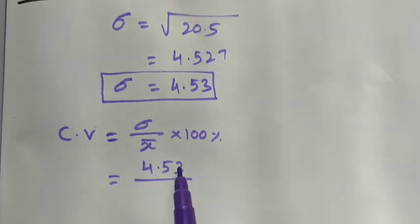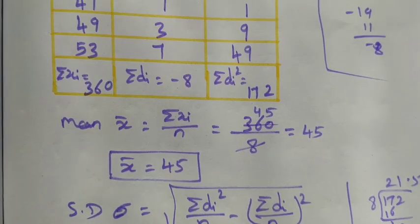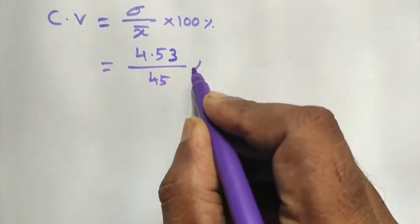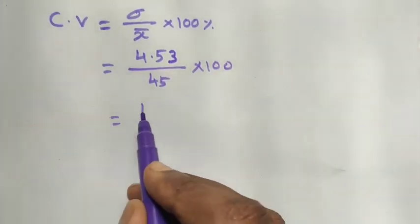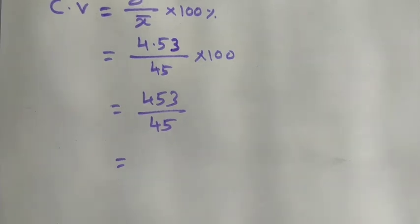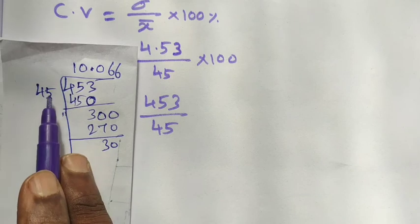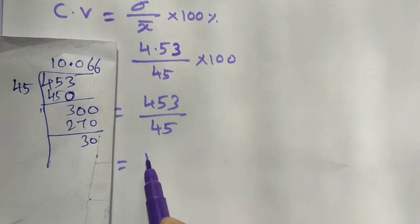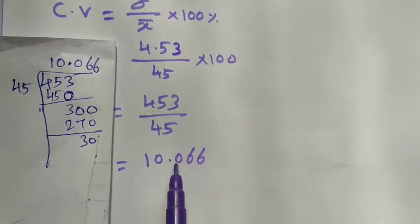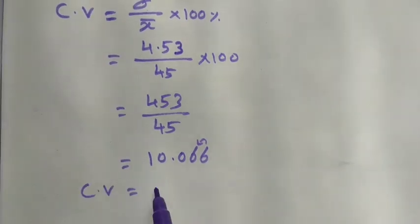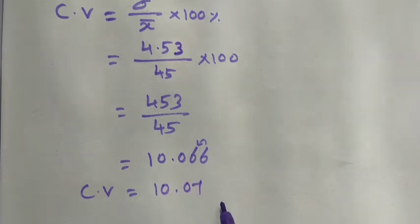Substituting: σ = 4.53 and x̄ = 45. So CV = (4.53 / 45) × 100 = 453 / 45 = 10.066... Taking two decimal places and rounding up (since the third decimal is more than 5), the coefficient of variation = 10.07%.